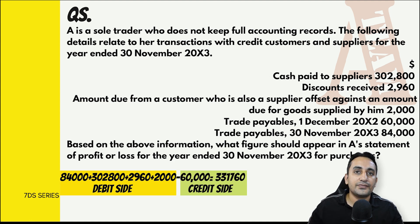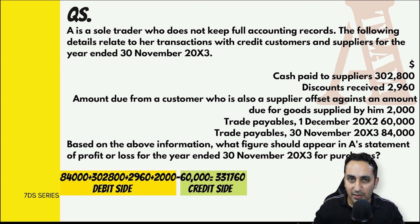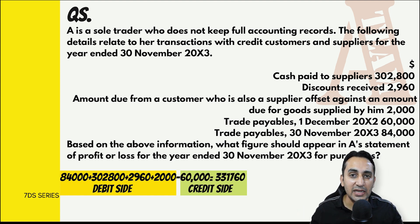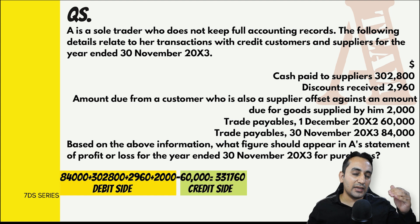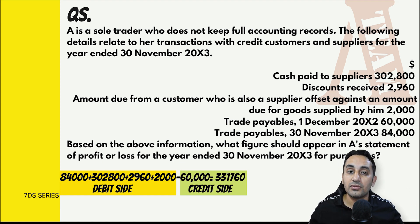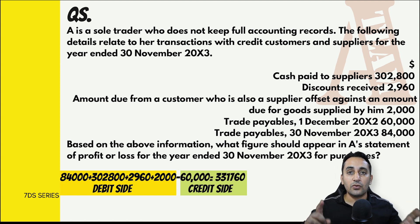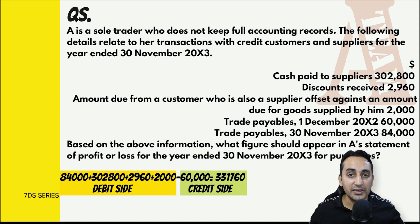Opening balance trade payables की credit side पे आता है और closing balance debit side पे। Debit side पे वही items आते हैं जो payables को कम करते हैं। तो debit side की जितनी भी items हैं वो payables को कम करती हैं। Closing stock को add करना होगा और opening balance को minus करने पर credit purchase का answer निकलेगा।